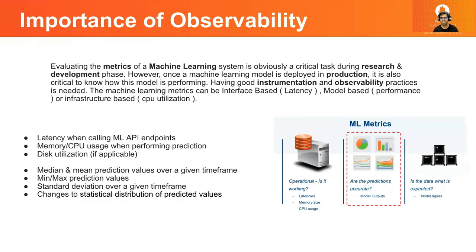Evaluating the metrics of a machine learning system is really important for research and even for production, because once the model has been deployed into production, it is critical to see how the machine learning model is performing at all times. Having great observability practices is needed to ensure smooth running of our machine learning model. The metrics on the basis of which we can evaluate performance can be interface-based — which could include latency — model-based — which could include the performance of the machine learning model — or even infrastructure-based, which includes CPU utilization.